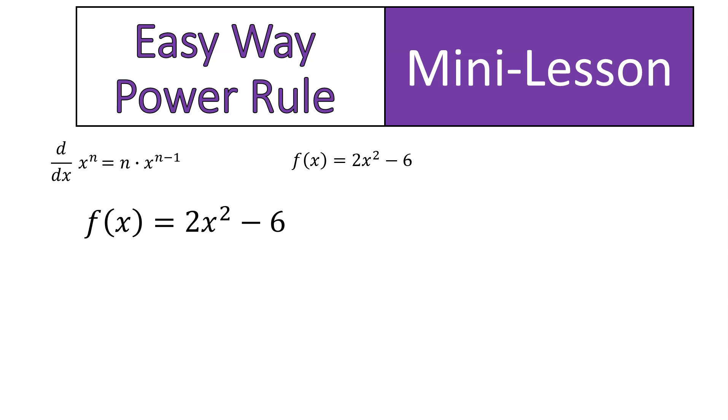n, which is our exponent, times x. In other words, we take our exponent and we multiply it times the coefficient of x. If there is no coefficient of x, you just put it in front. Then, we take that exponent and we reduce it by 1. So that would look like 4x to the power of 1.